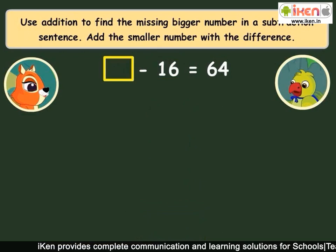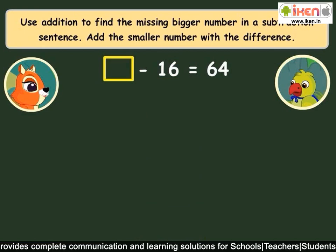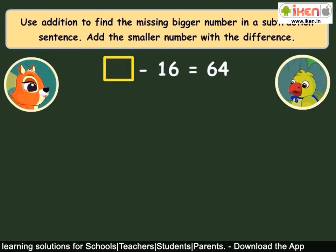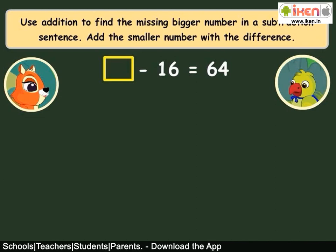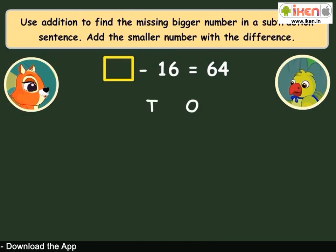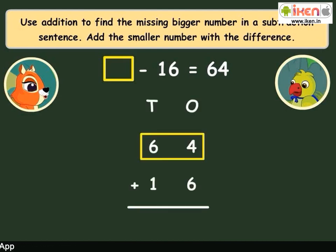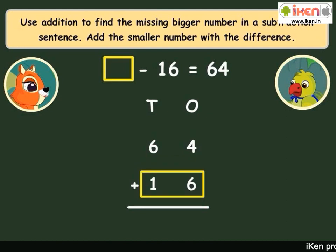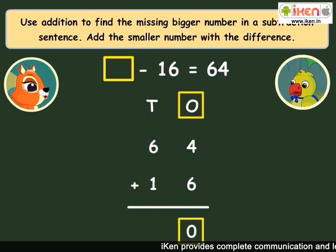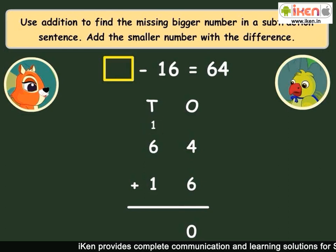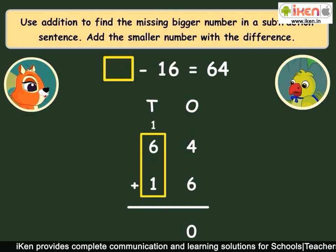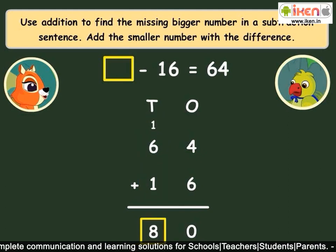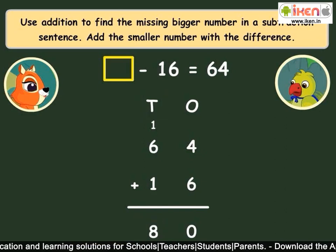Now look at this subtraction statement — the bigger number is missing here. We use addition to find the missing bigger number: we add the smaller number with the difference. Go on, find the missing number, Amber. We need to add 64 and 16. 6 plus 4 is 10; write 0 in the ones column and carry over 1. 6 plus 1 plus 1 is 8, so we write 8 in the tens column. The missing number is 80.